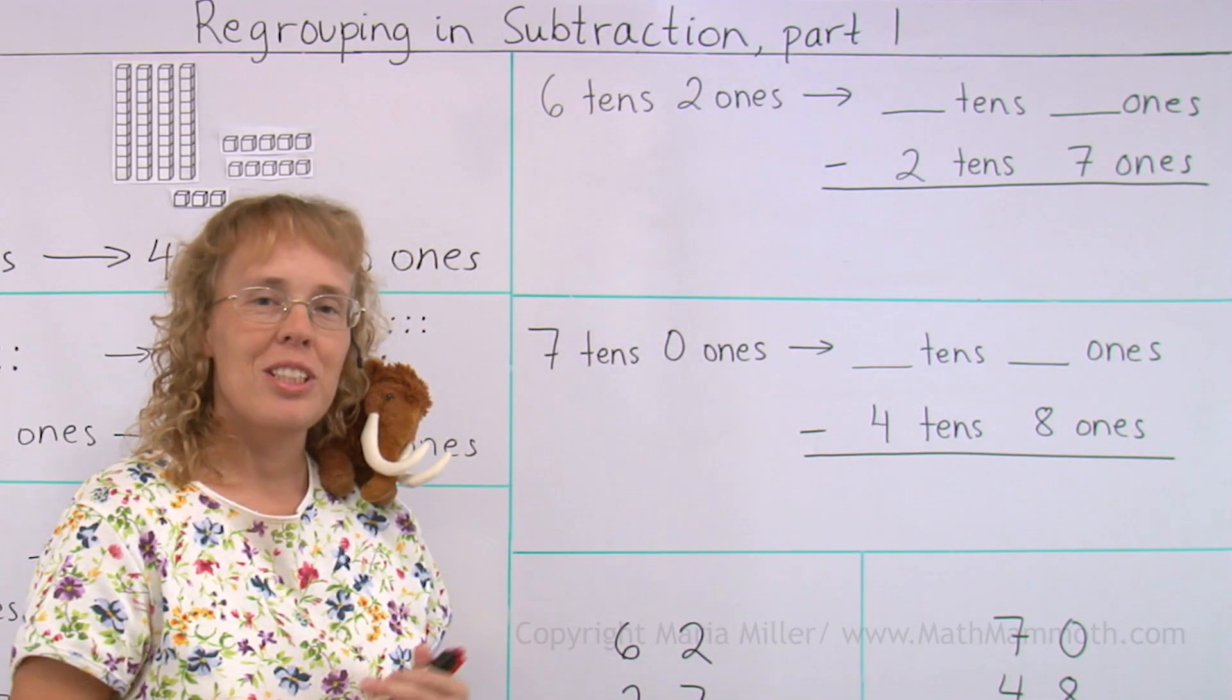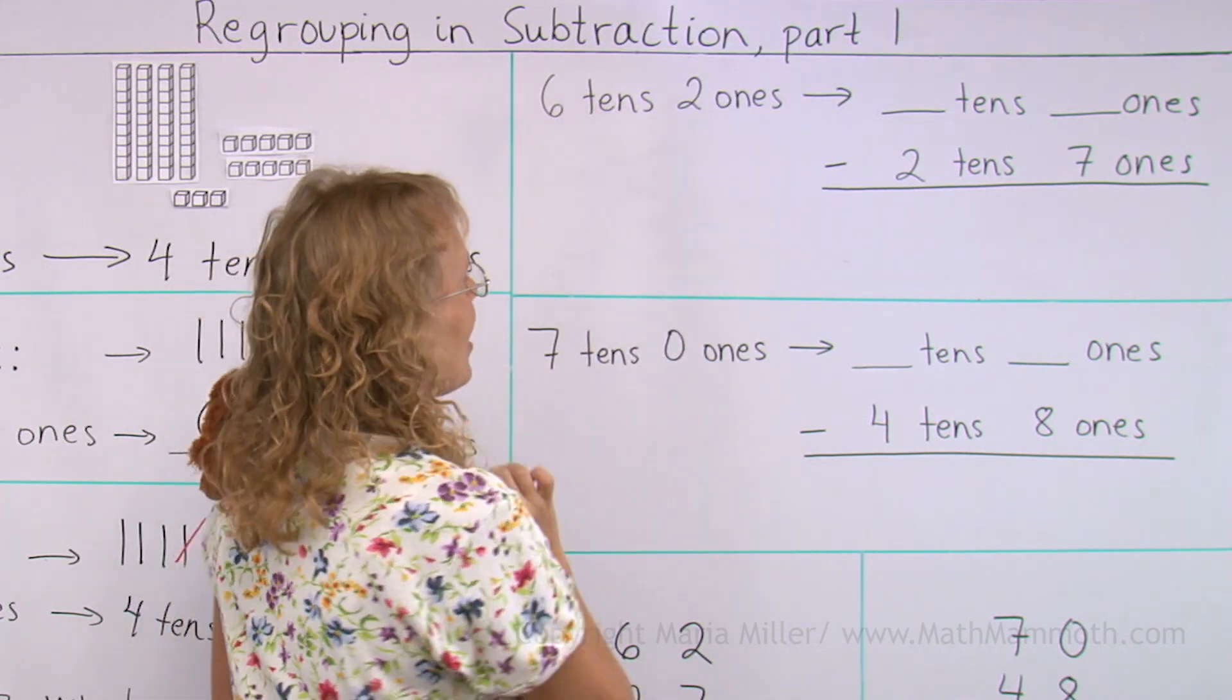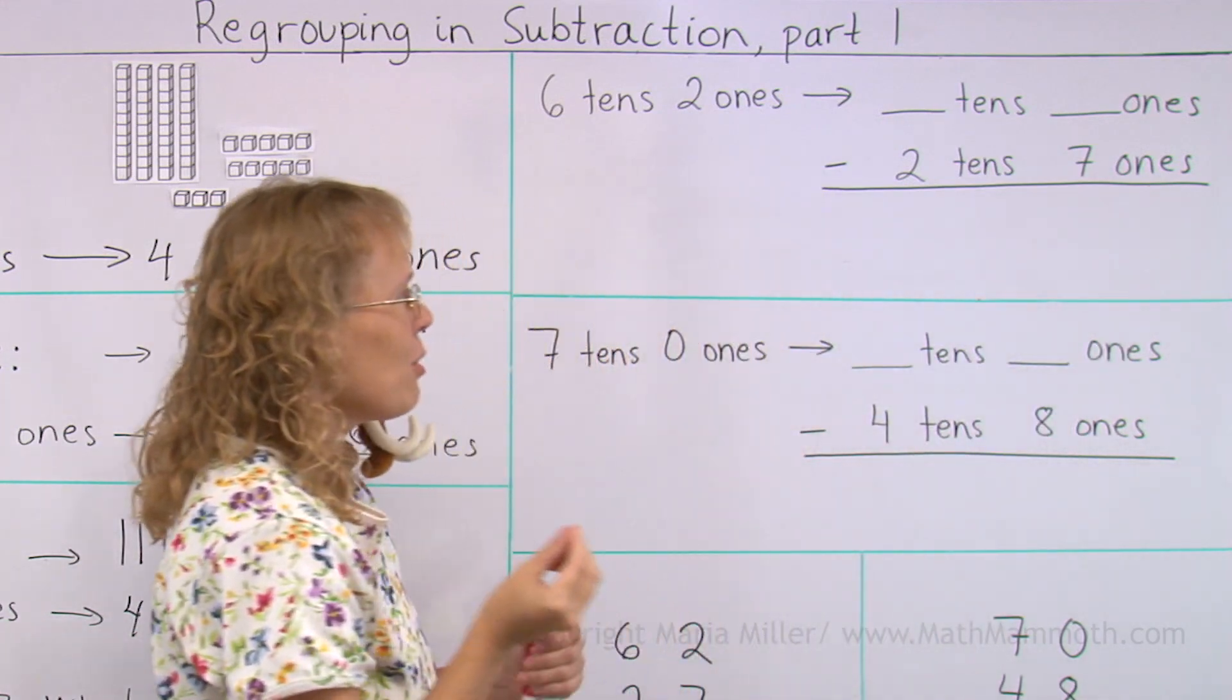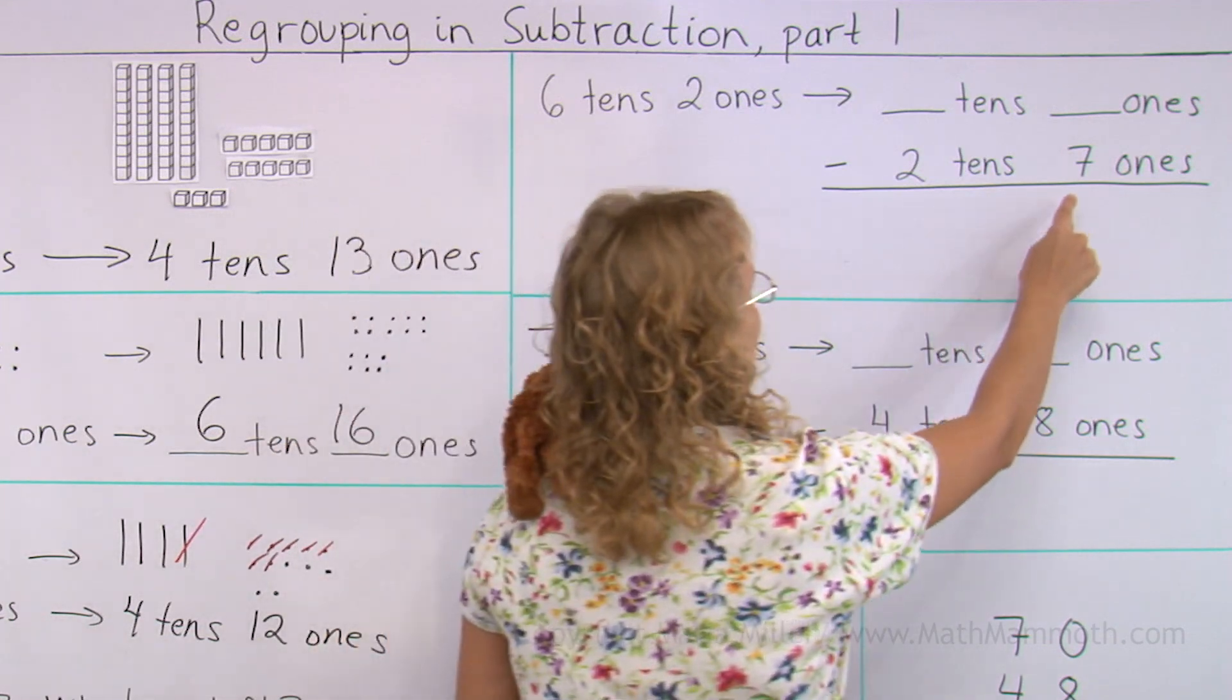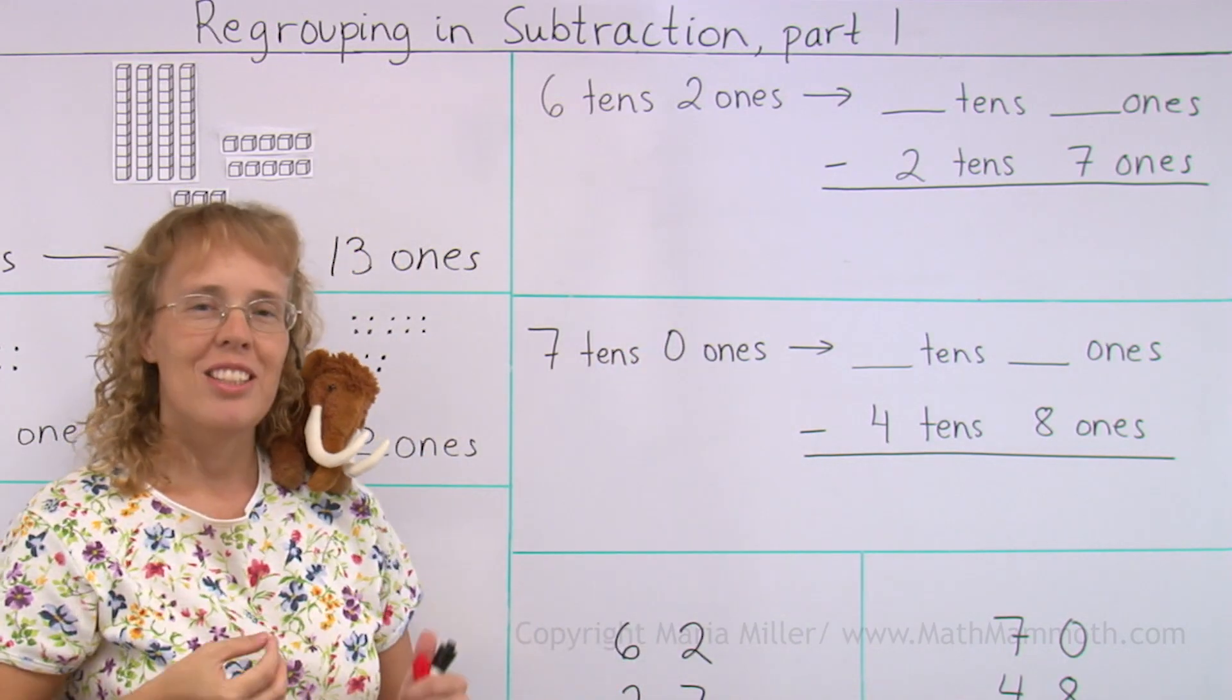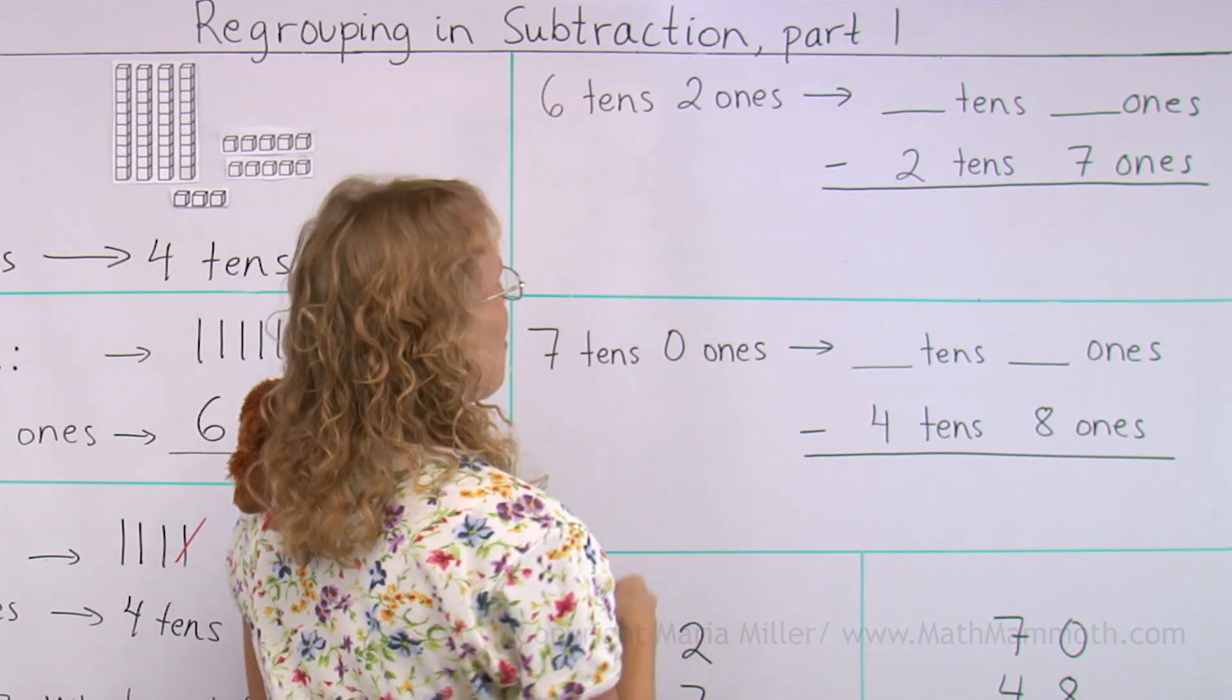Now we are going to do it in a little different way without a visual model. I have six tens, two ones. And I need to subtract two tens, seven ones. And when you think of it, I cannot do that subtraction easily because there's seven ones to take away. I only have two ones. And that is why we need to regroup first.